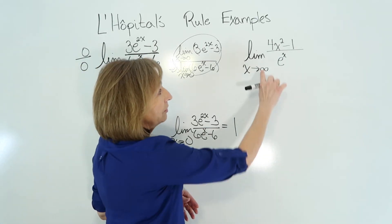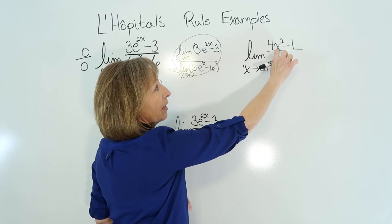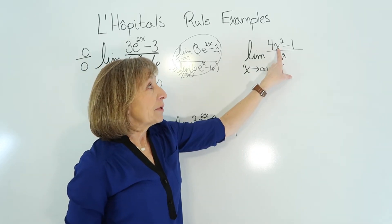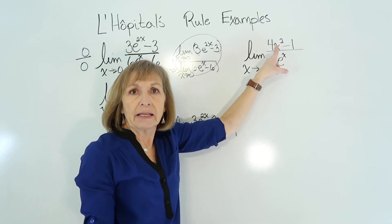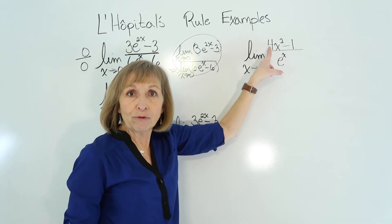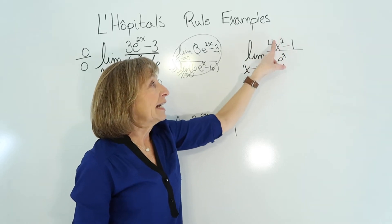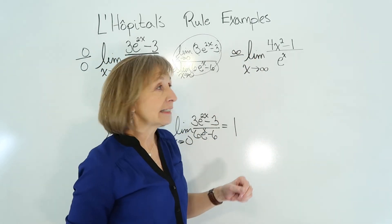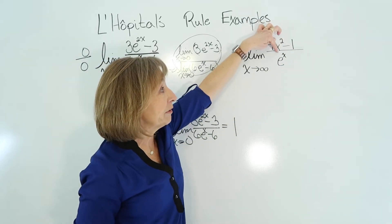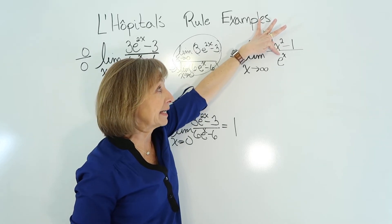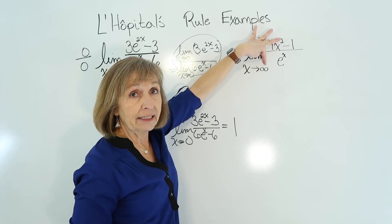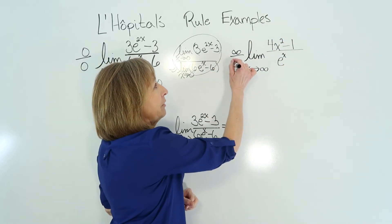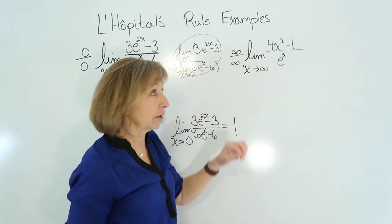Let's look at the next one. Here I have the limit as x approaches infinity of (4x² − 1) over e^x. As x approaches infinity, x² grows extremely large, so 4x² − 1 approaches infinity — my numerator approaches infinity. In the denominator, e^x with no negative in the exponent also approaches infinity as x approaches infinity. So this is the indeterminate form of infinity over infinity.